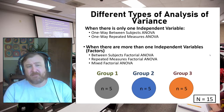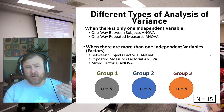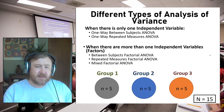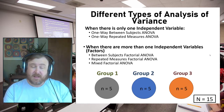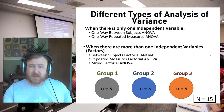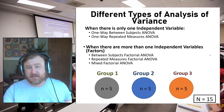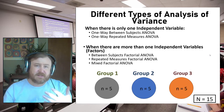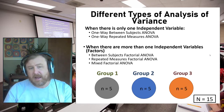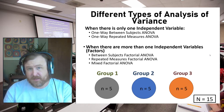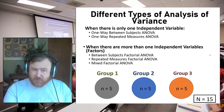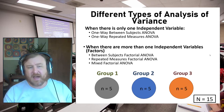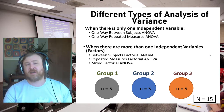A factorial ANOVA is also separated by the type of research design. There are three predominant types. A between-subjects factorial ANOVA would be if you had two independent variables that were both between-subjects — for example, a treatment type (where different people get psychological treatment vs. a control condition) and biological sex. Both of those are between-subjects factors, so that would be a between-subjects factorial ANOVA.